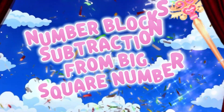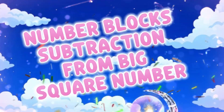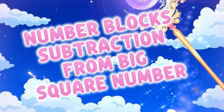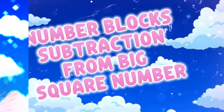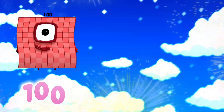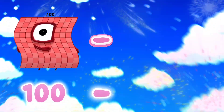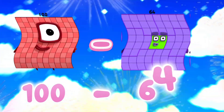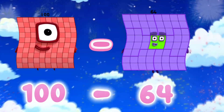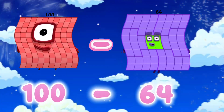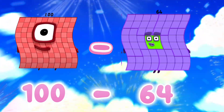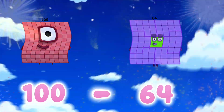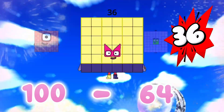Number block subtraction from big square numbers. 100 minus 64 is equals to 36.